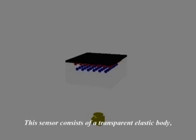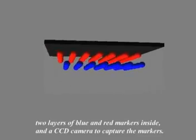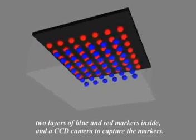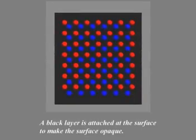This sensor consists of a transparent elastic body, two layers of red and blue markers inside, and a CCD camera to capture the markers. A black layer is attached at the surface to make the surface opaque.